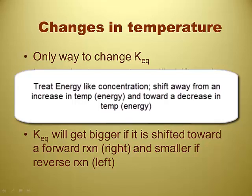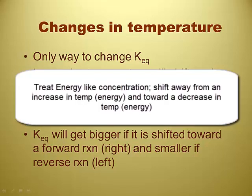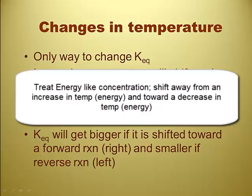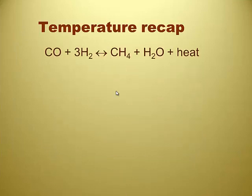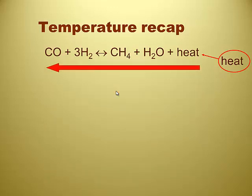This is the only one that's going to actually change the value of K. If you're shifting toward the product side, you are going to make more products and your K is going to get bigger. And if you shift towards the left, it's going to get smaller because your products are getting smaller. Notice energy written on the right-hand side — treat it like a substance. So if I was to add more heat, the reaction is going to want to get rid of it, so it's going to shift to the left. And that will make the KEQ drop — shifting to the left, away from the products, making less products, more reactants, smaller KEQ.